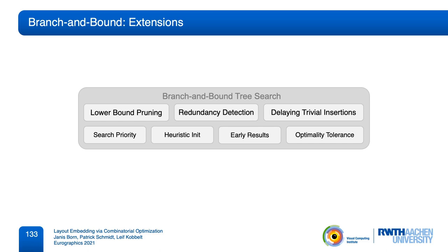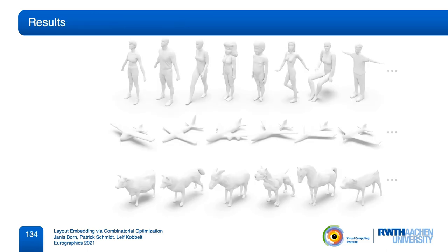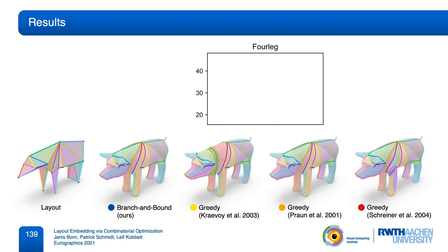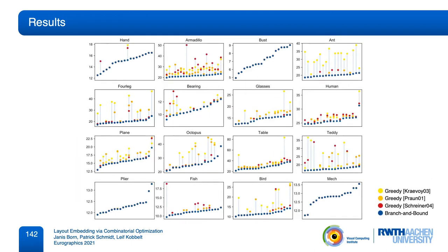We now demonstrate the robustness of this branch-and-bound system in comparison to greedy methods. As an experiment, we compute compatible layout embeddings on a shape collection. We use the Shrek dataset, which consists of several collections of objects, all annotated with corresponding landmarks. For each category, we generate a prototype layout and then embed it into the different instances using the provided landmark positions. For each instance, we compute this embedding with our branch-and-bound method and different greedy methods. Here we plot the resulting total embedding length on the y-axis. We repeat this for all instances and all categories.